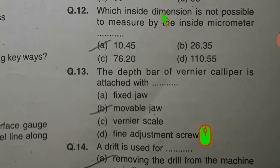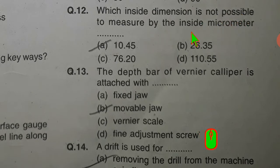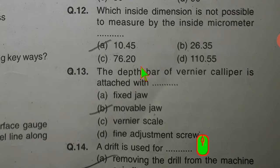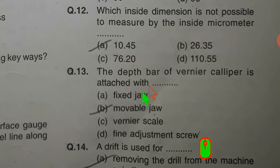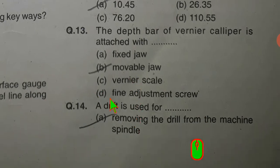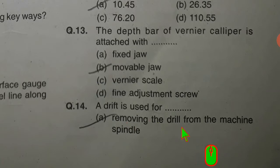Which inside dimension is not possible to measure by the inside micrometer? 10.45 mm. The depth bar of a vernier caliper is attached with the movable jaw.